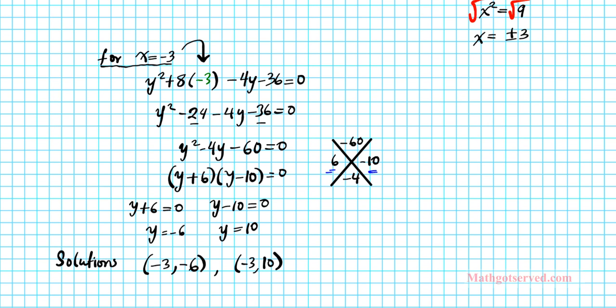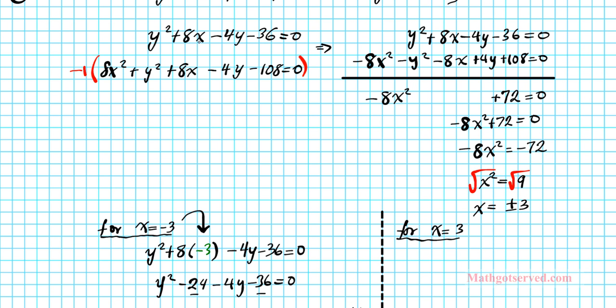So what do we do next? Well, we remember that we have two values for x. We had x = -3 and positive 3. So we're going to carry out the same process that we executed here for x = 3. So let's go ahead and do that. We're plugging 3 into the same equation. So that's going to give us y² + 8(3) - 4y - 36 = 0.